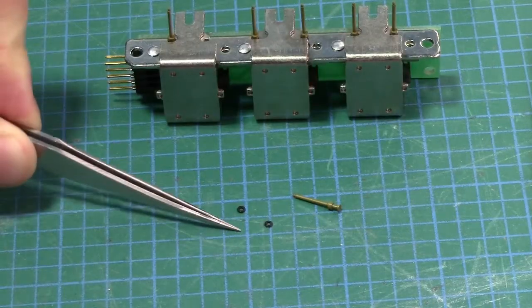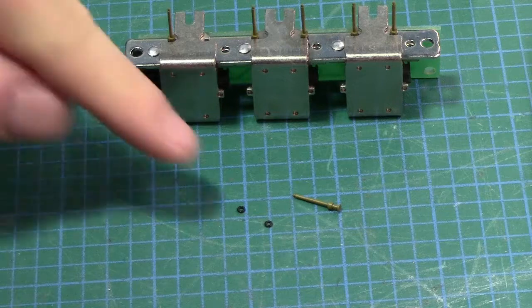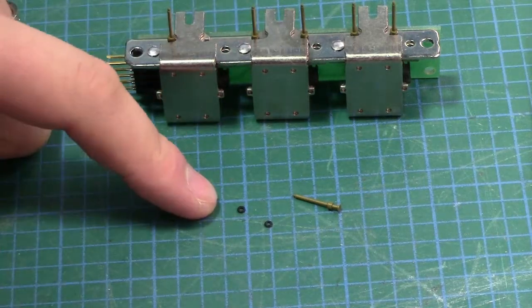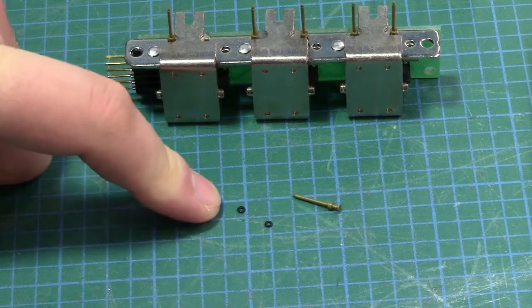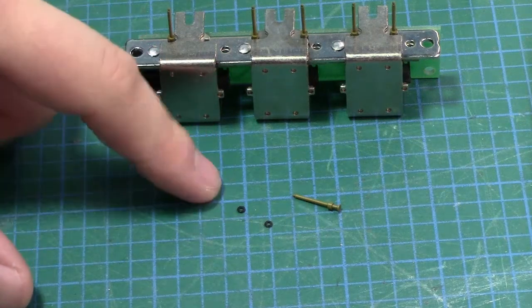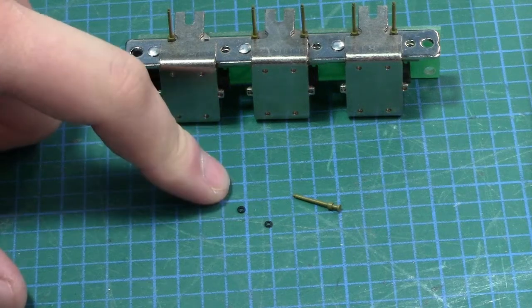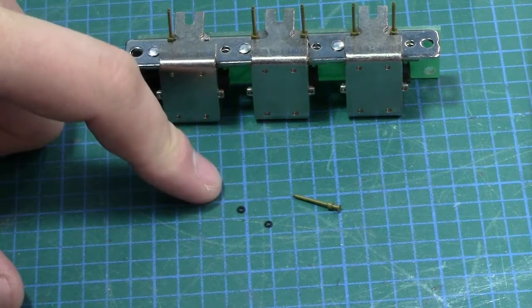All right. So we have our two O-rings here, and we have our piston here. Quick note about these O-rings. These are 2mm outer diameter, 1mm internal diameter, 2mm outer diameter, 1mm inner diameter, and the ring itself is 0.5mm thick.